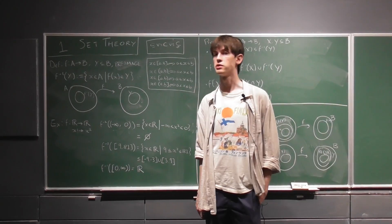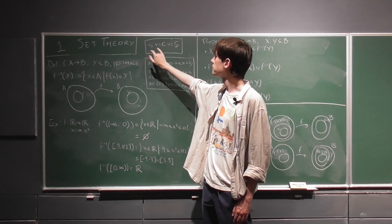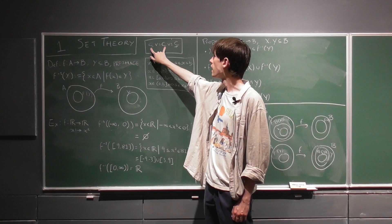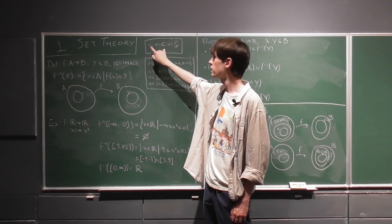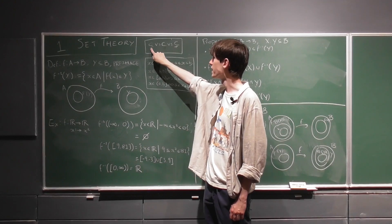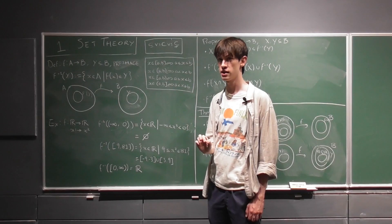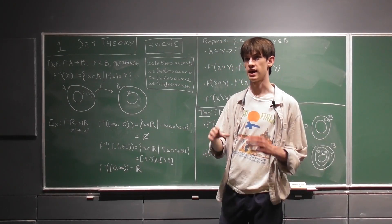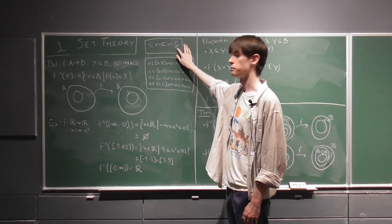So just some notation before we get onto the next section. Here, you'll sometimes see me switching between these two symbols for a subset. These are almost always just used interchangeably. So one doesn't have the little line underneath, and one does.